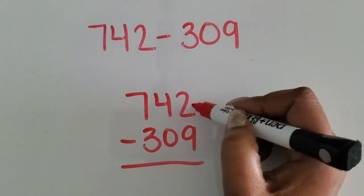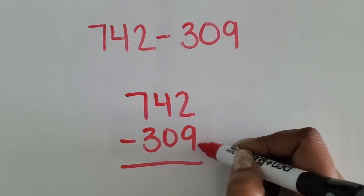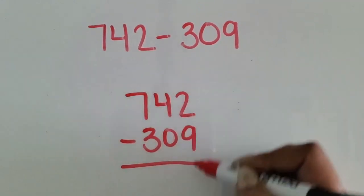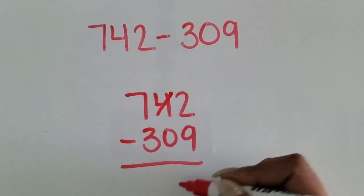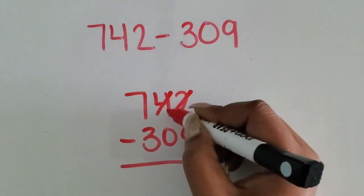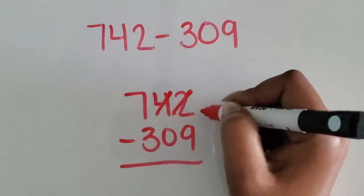I have two ones here. I need to subtract nine ones. I don't have enough for my answer to be positive, so I need to regroup from the tens place. Once I regroup one ten for ten ones,